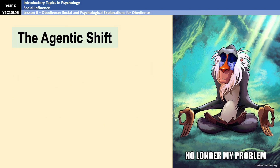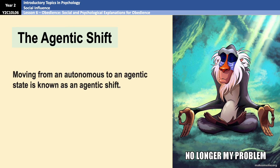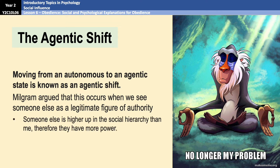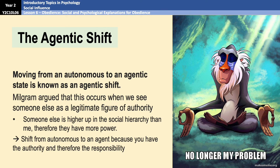The process of moving from an autonomous state to an agentic state is known as the agentic shift. Milgram suggested this shift happens when we are in the presence of someone we perceive to be a legitimate authority figure — someone high up in the social hierarchy. When such a person is present, others in the group generally defer decisions and actions to that person, resulting in the agentic shift. This is why it makes sense to cover legitimacy of authority first: you cannot have an agentic state without the presence of a legitimate authority figure.